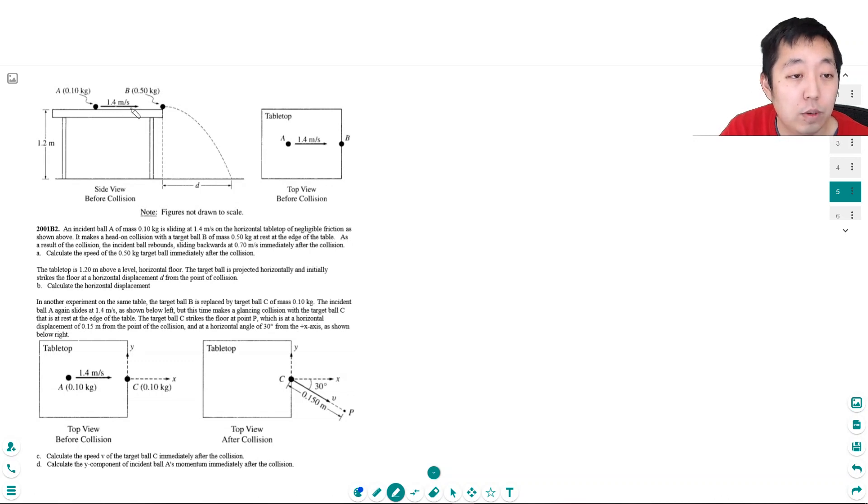The momentum before is just from A. The momentum before equals the mass of A times the velocity of A. That's the only momentum, which is 0.1 kilograms times 1.4 meters per second. That's 0.14 kilograms meters per second.